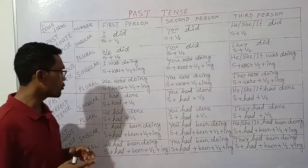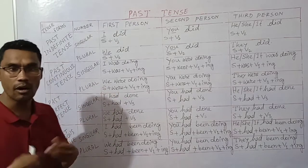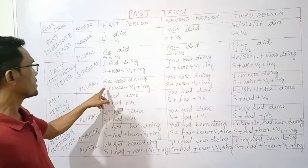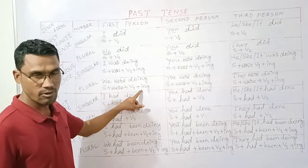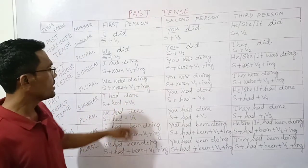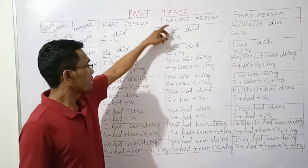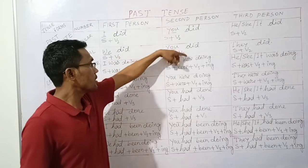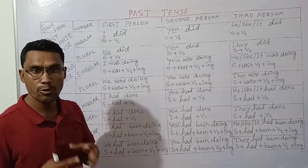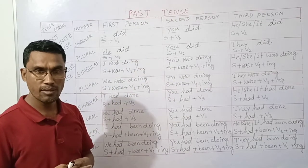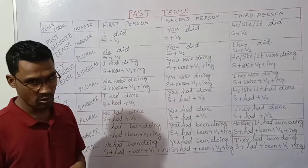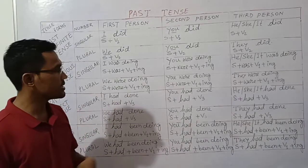For second person singular and plural 'you': 'You were doing your homework.' Third person singular 'he': 'He was doing his homework.' Third person singular 'she': 'She was doing her homework.'